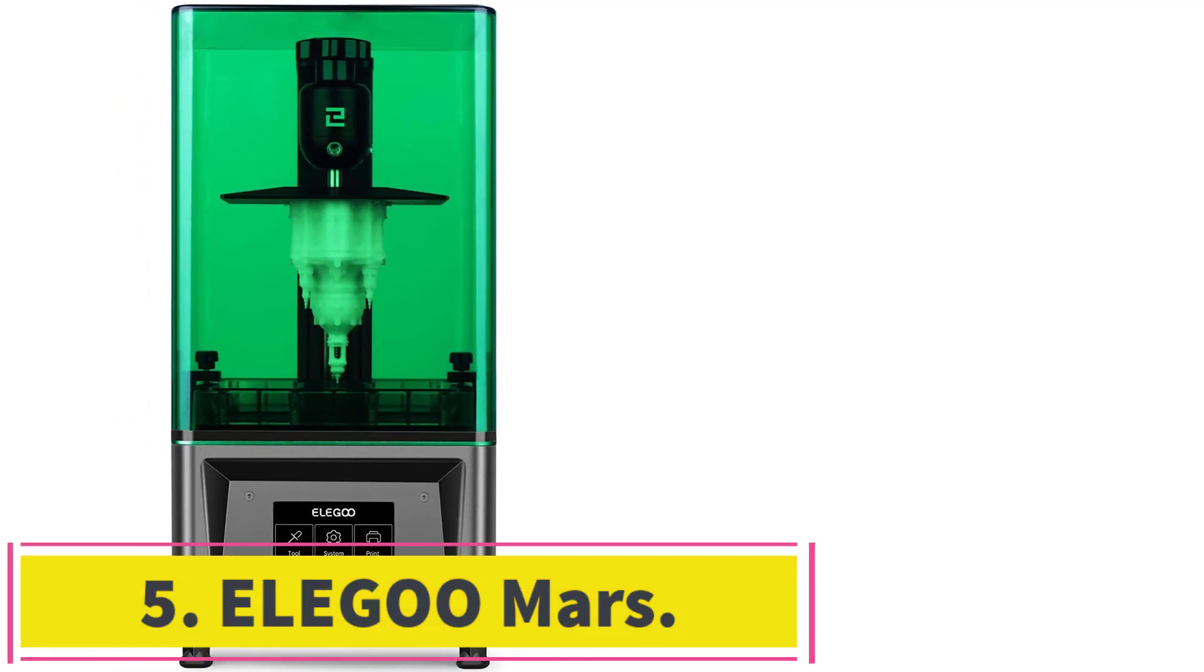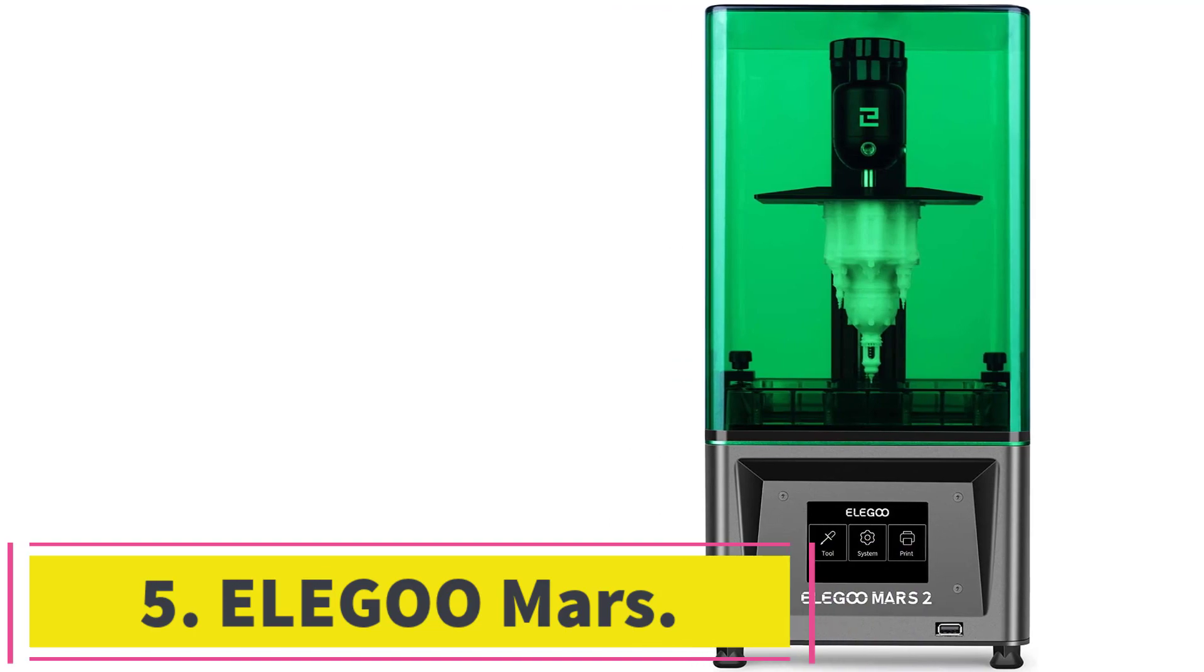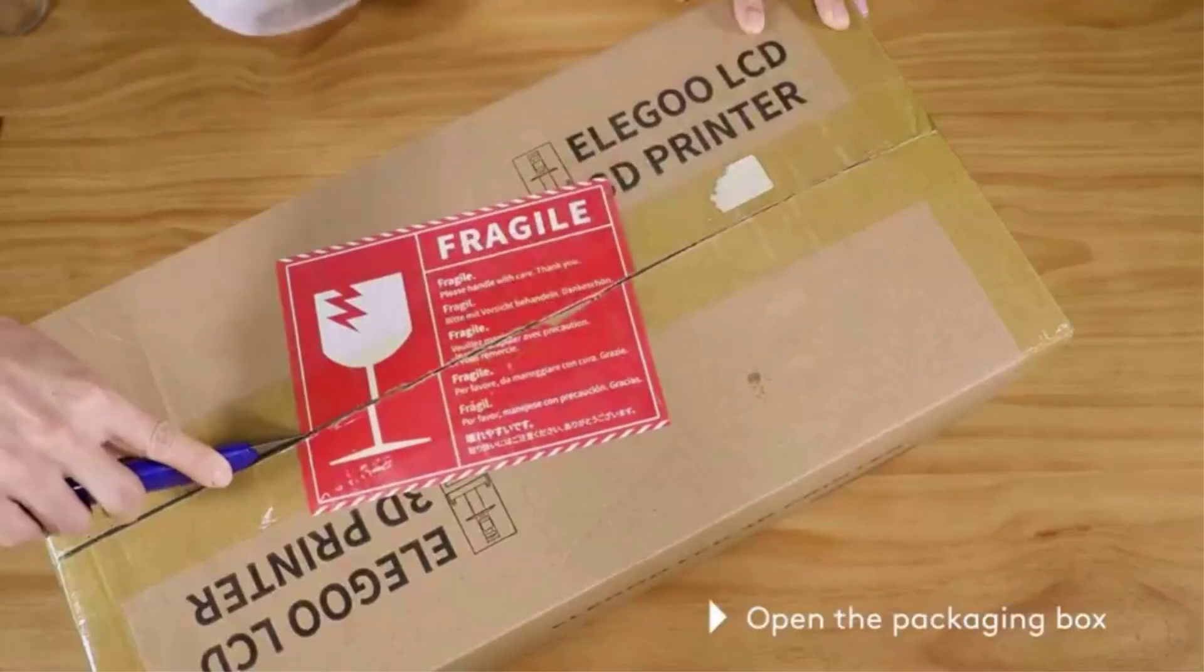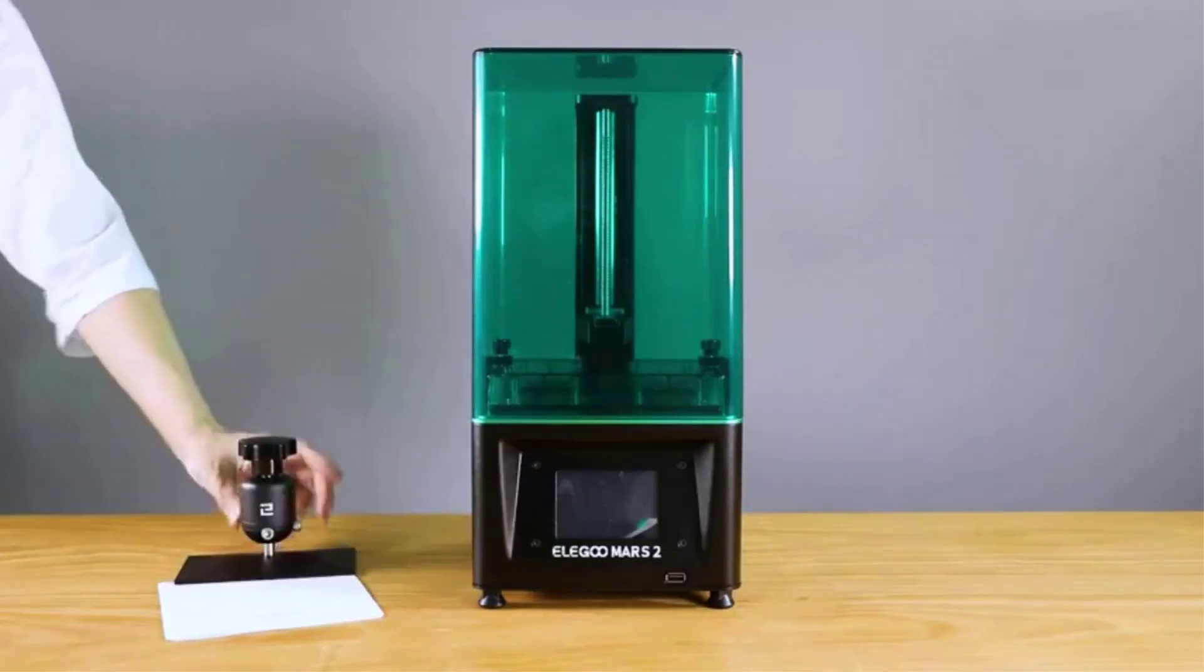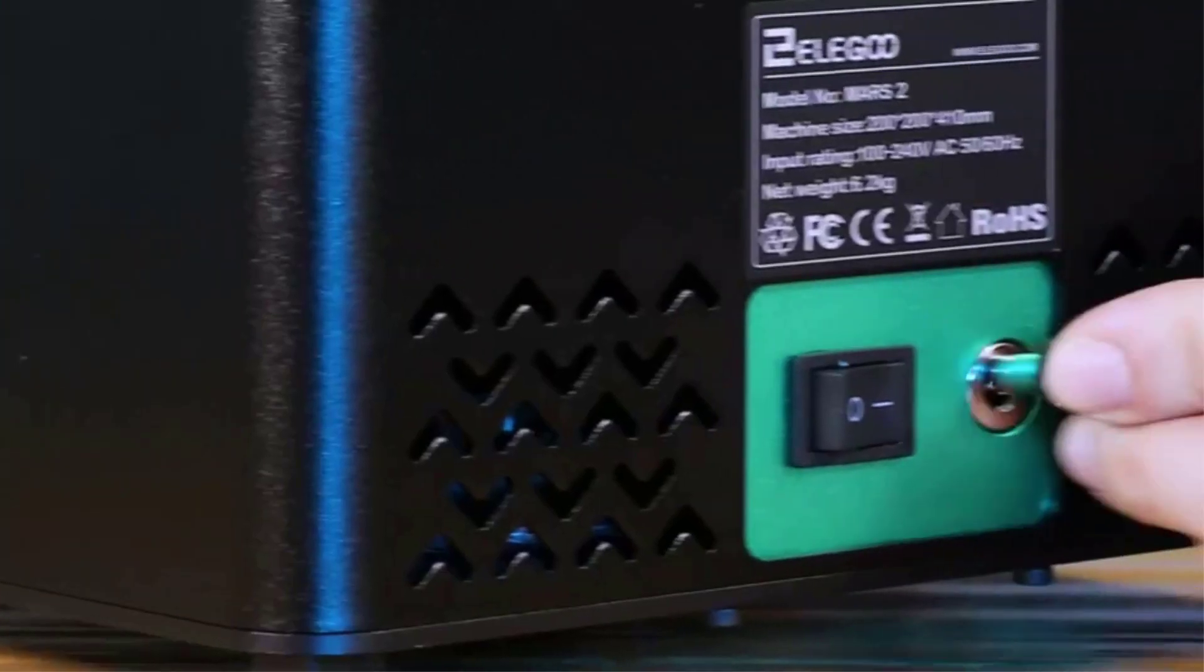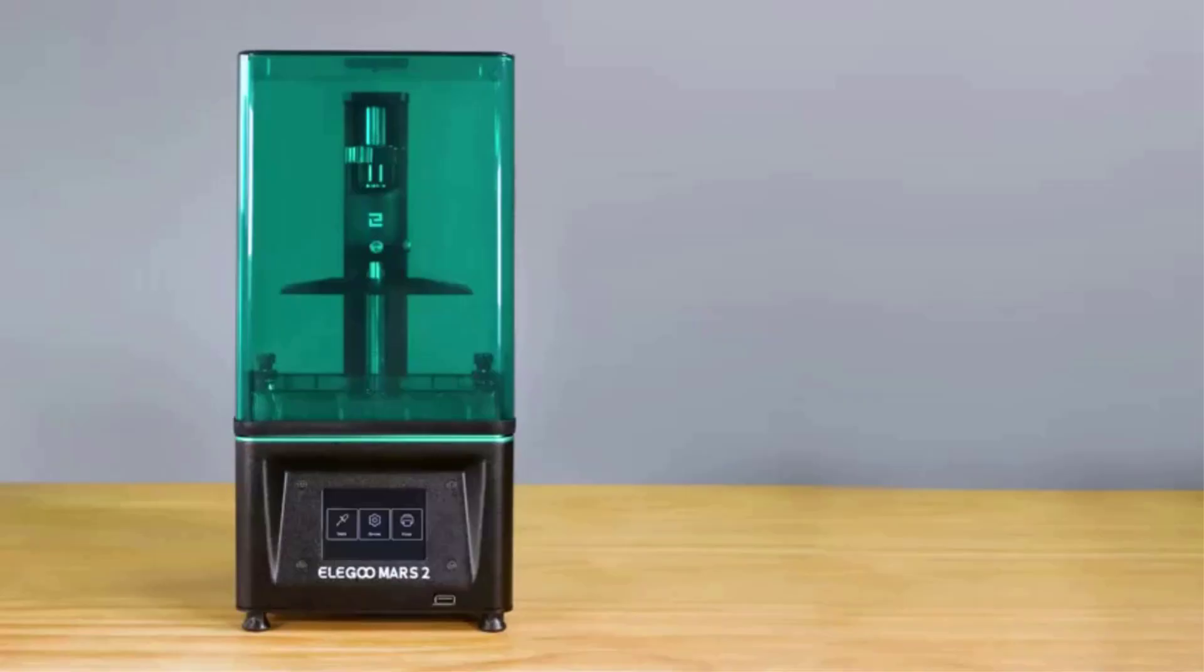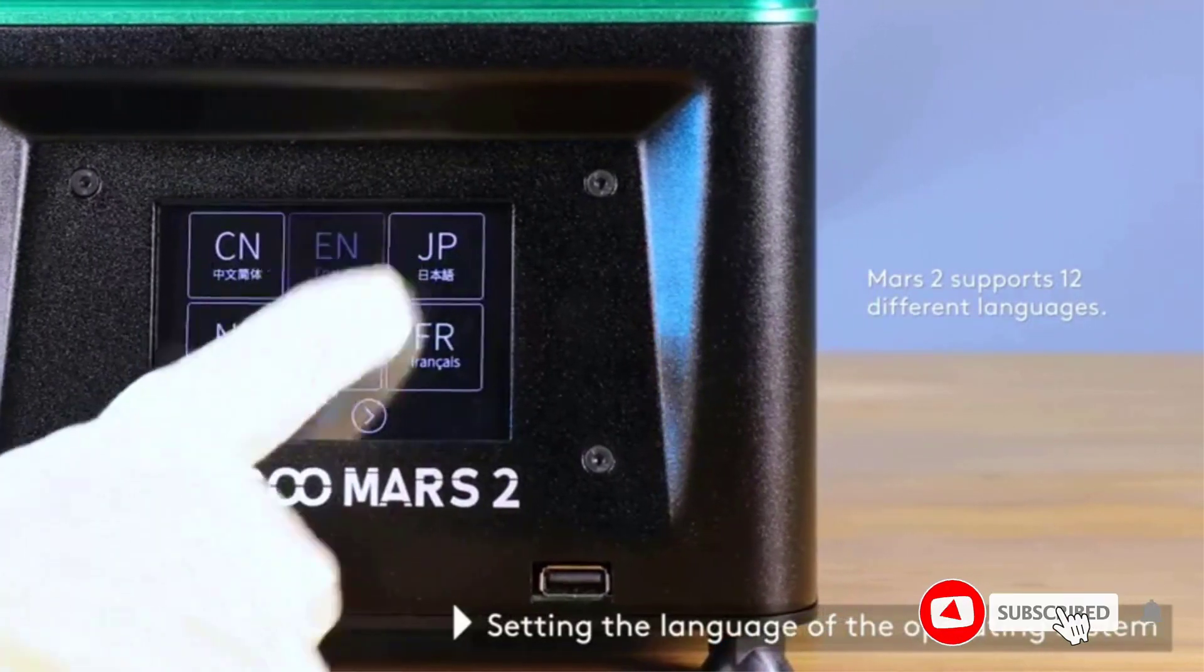Number 5, Elegoo Mars. This 3D printer for jewelry utilizes UV photo-curing technology. It's convenient to use and has a good design, due to which you will easily master it even if you don't have experience with similar devices. It's semi-assembled so you won't have to spend much time installing it. In 5 minutes, you will be able to begin printing your first model. You can also easily slice it by using the latest Chittabox slicing software.